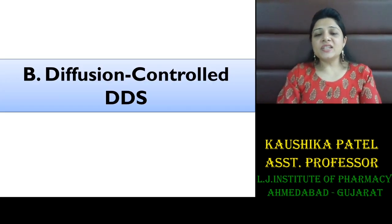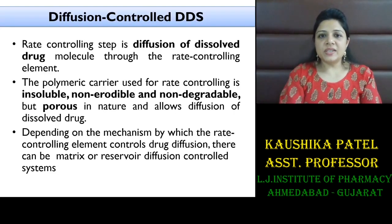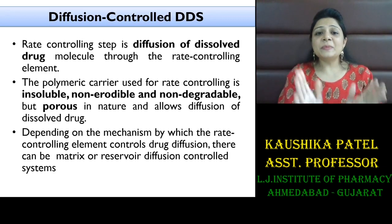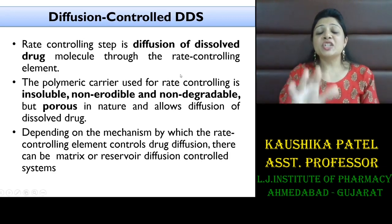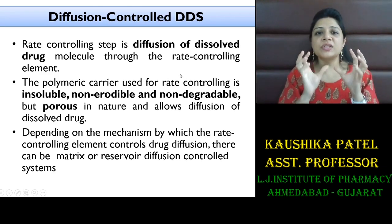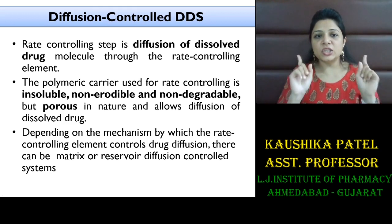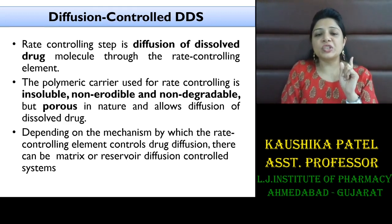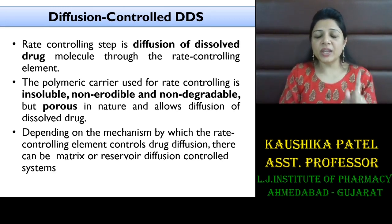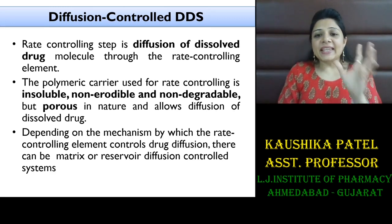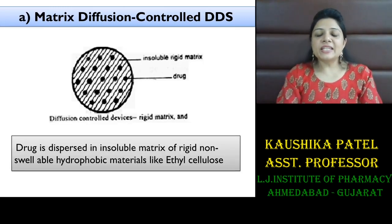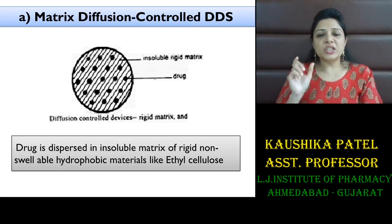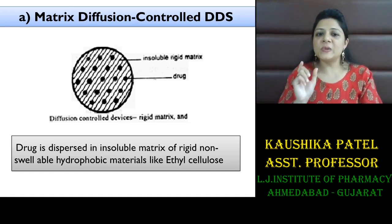The second major mechanism is the diffusion control drug delivery system. Here, the rate-limiting step is the diffusion of the dissolved drug particles through the rate-controlling element. Depending upon the mechanism, you can have a matrix diffusion control system or a reservoir diffusion control system.